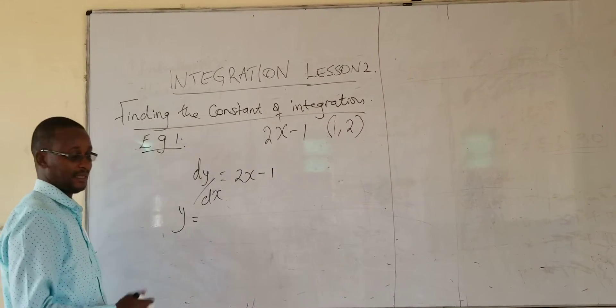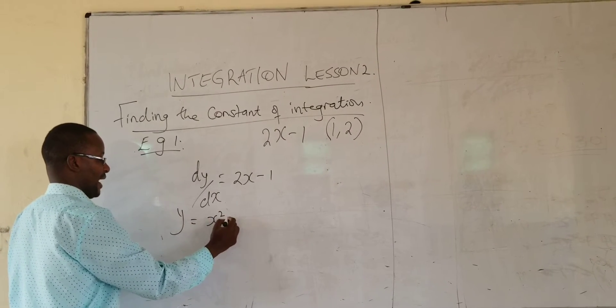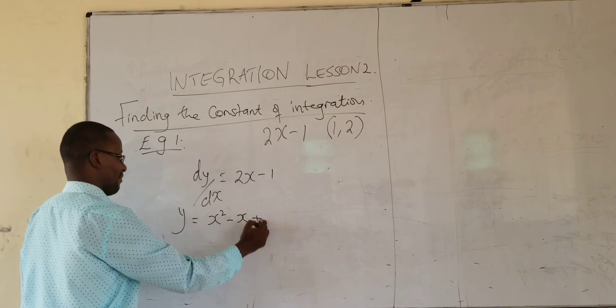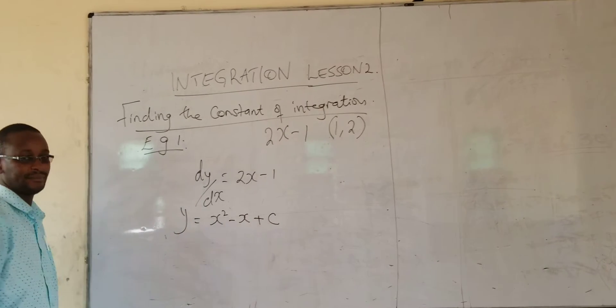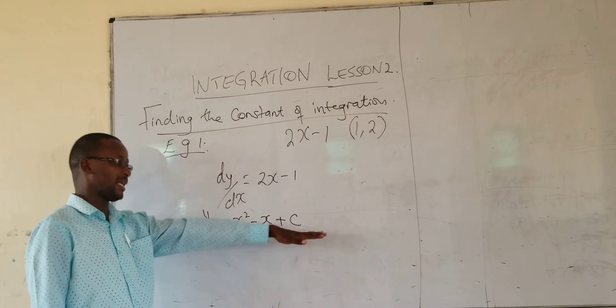To get y, we integrate the way we did yesterday. So when you integrate this, you will get x squared minus x plus a constant C. Now this is the arbitrary constant that we want to find so that we can complete the equation.